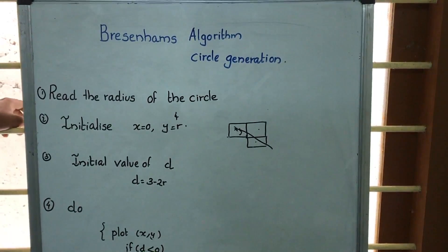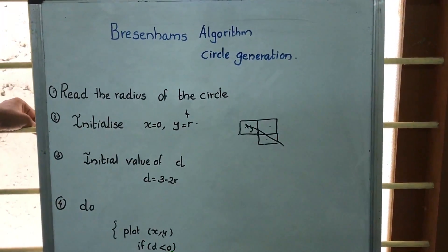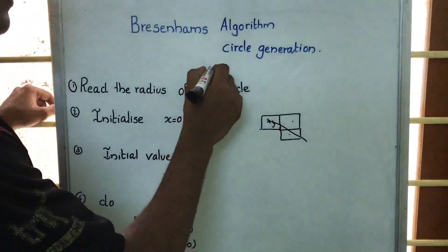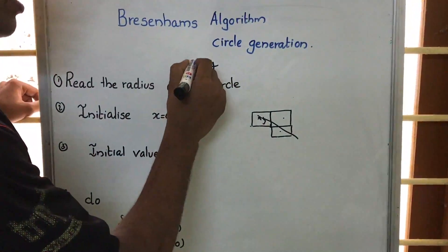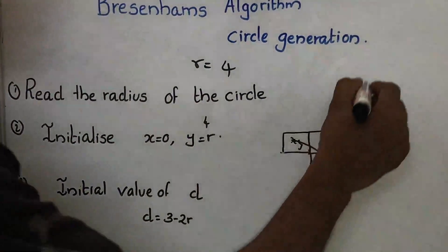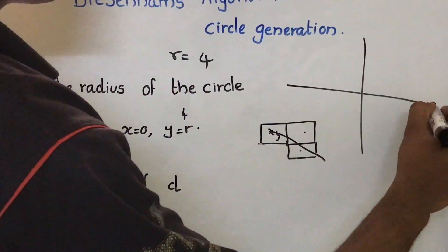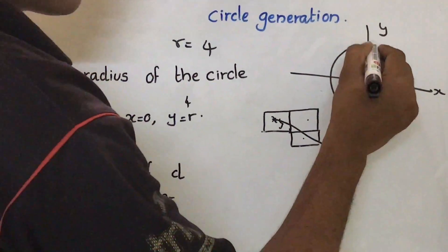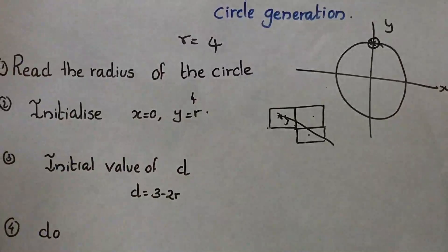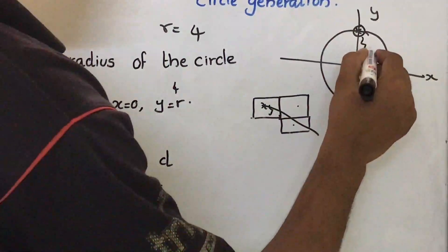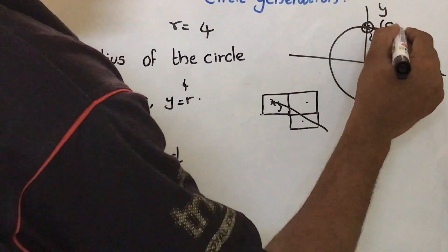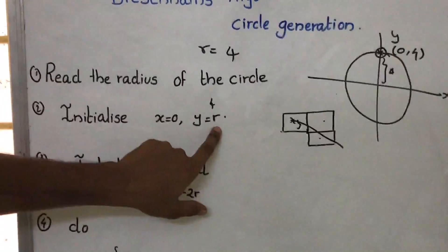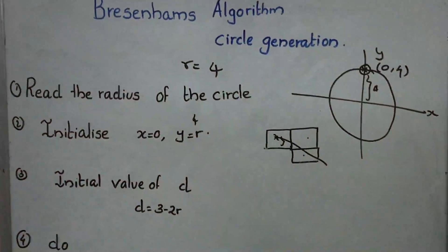Present Bresenham's algorithm circle generation. The first step is we have to supply the radius. Suppose we want to draw a circle of radius 4, so r is equal to 4. Let this be the x-axis, this be the y-axis, this will be our circle. Initially we take this point as the initial point, so if radius is r — here radius is 4 — that means initially the point is (0, 4). So initialize x equal to 0 and y equal to 4.